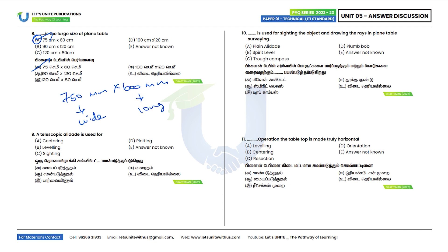Ninth question: A telescopic alidade is used for sighting. Option C is the correct answer. Sighting can be done with an inclined alidade.